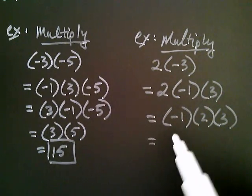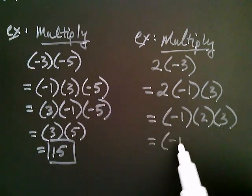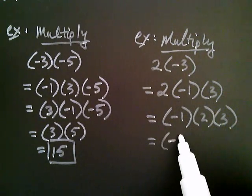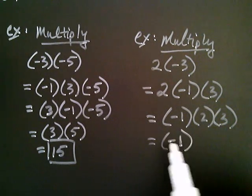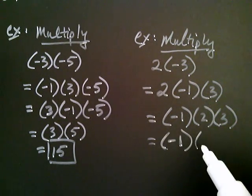Two times three is six. So I'm looking at negative one multiplied by six.